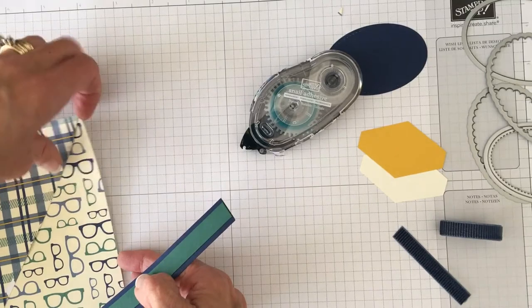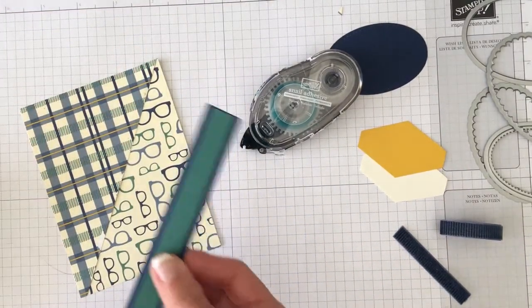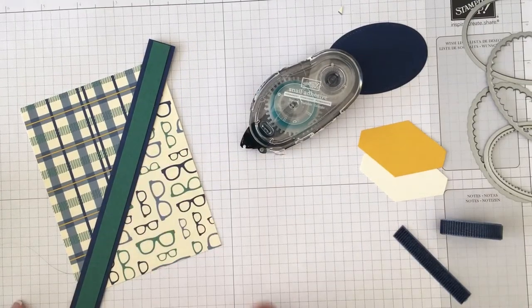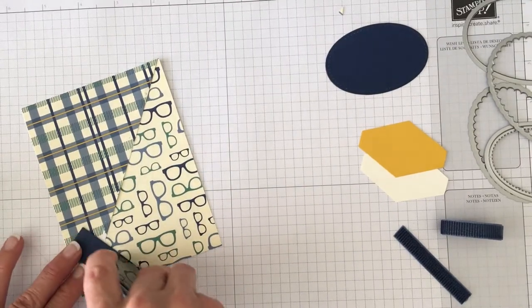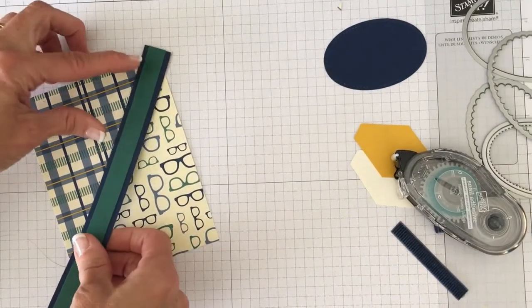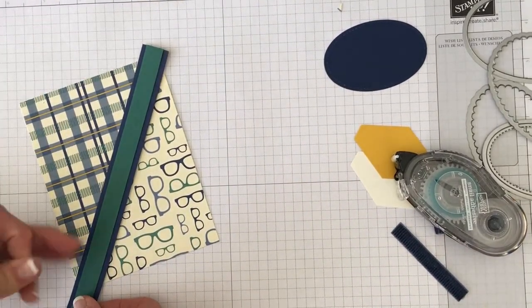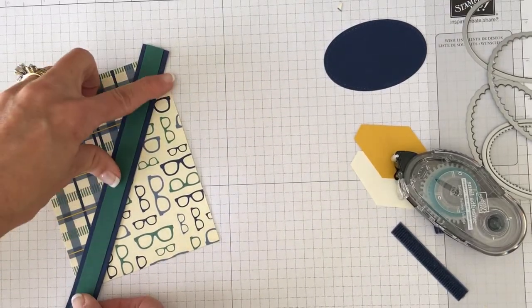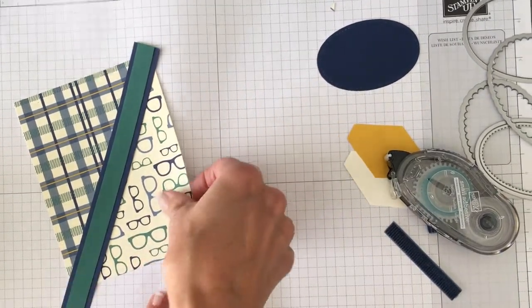So what I did was I just pulled out the Tranquil Tide and the Night of Navy. So once you have these triangles adhered onto that panel you're going to be laying this middle divider across there. So what I did is I just put some snail across my strip and then I just lined it up and made it go over the middle of the panel that's going on the front.